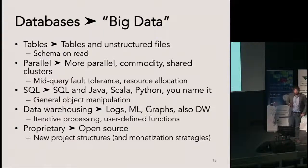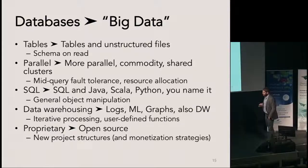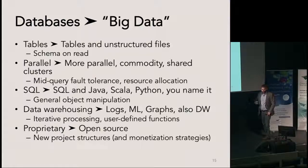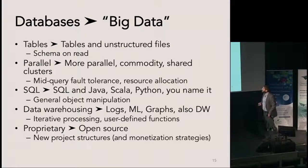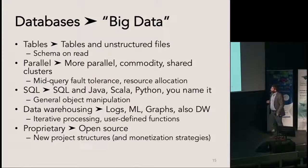The second difference is that now we have more machines — an order of magnitude more, pioneered by Google. In addition, these machines are very commodity and fail very often. So you need the software to deal with these failures — essentially mid-query fault tolerance, so that while your program is running, if something fails, the program will continue. These clusters are also shared between many applications, not dedicated to the database, so you need a resource allocator for every application to talk to.